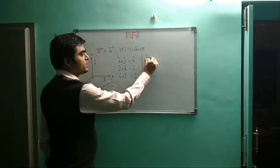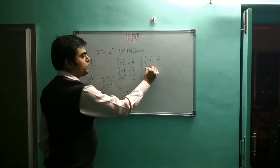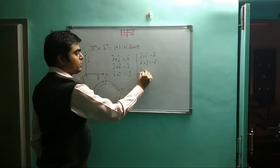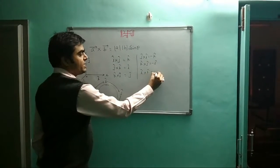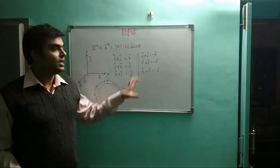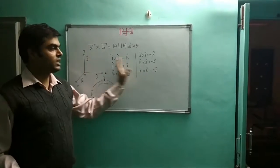In the anticlockwise direction: j cross i equals minus k cap, k cross j equals minus i cap, i cross k equals minus j cap. First is clockwise direction, second is anticlockwise direction. This completes the unit vector cross products.